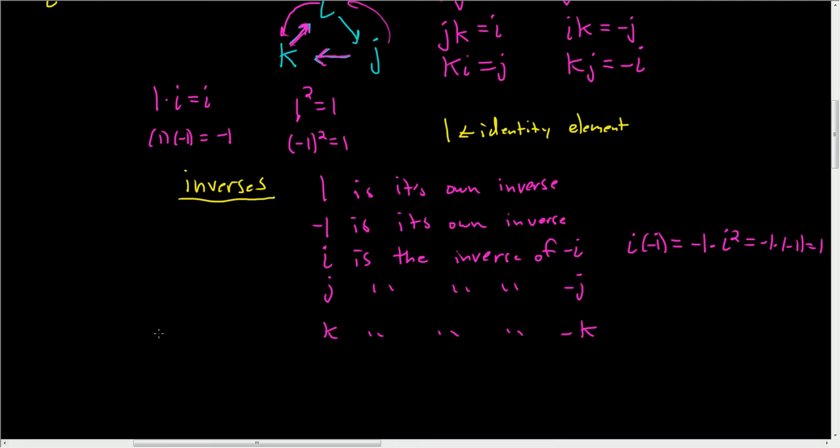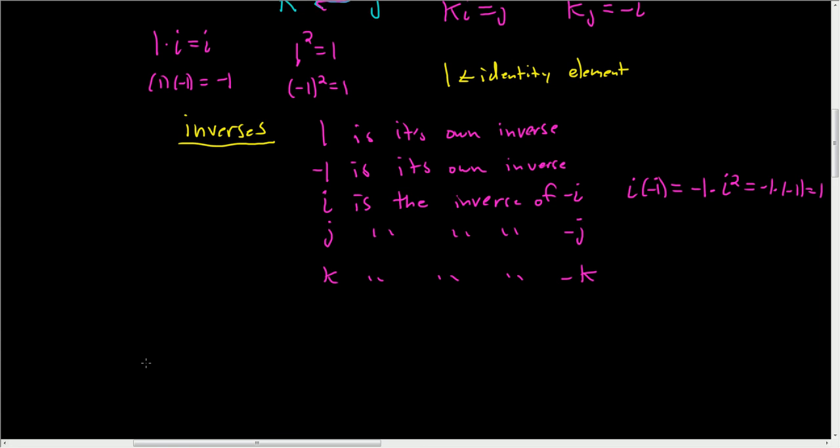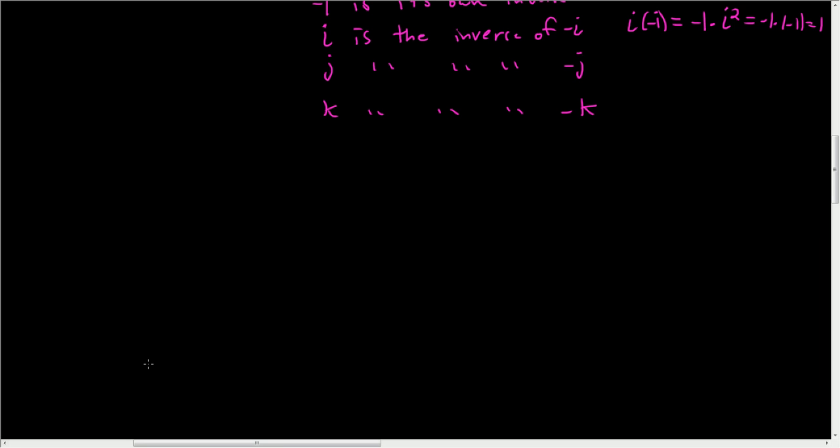So we do have a group, it's called the Quaternions. Let's go ahead and look at a quick subgroup lattice and talk about all of the subgroups of the Quaternions. That's actually what makes it quite interesting. So this is Q8, and this is the set with 1, negative 1, I, negative I, J, negative J, and then K, and negative K.